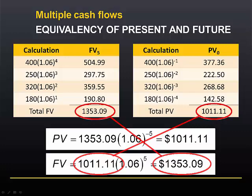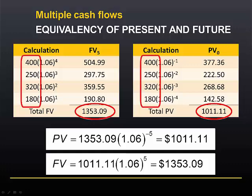What this demonstrates is that a single cash flow today of $1,011.11, or a single cash flow 5 years from now of $1,353.09, or that series of 4 cash flows, all have exactly the same value, and we should be indifferent between choosing any of them.